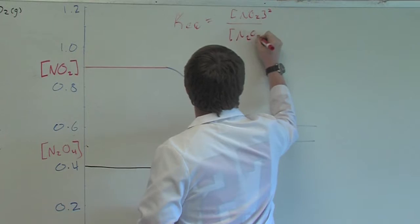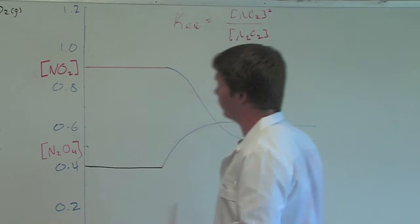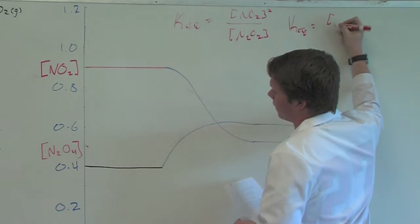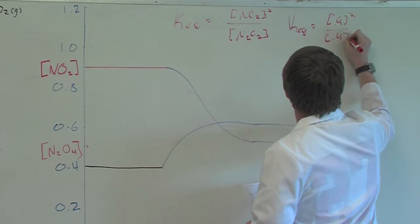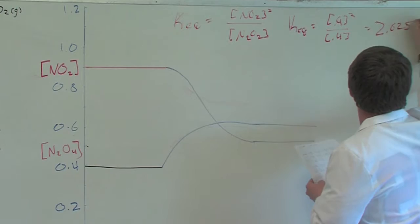The initial concentrations for both are 0.9 for NO2 and 0.4 for N2O4. So the initial KEQ should be 0.9 squared over 0.4, which is going to equal 2.025.